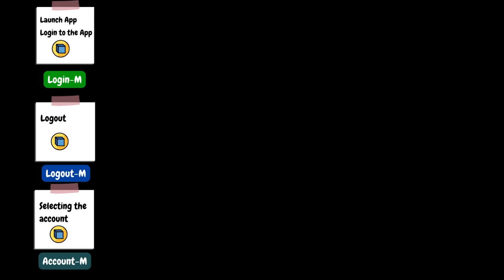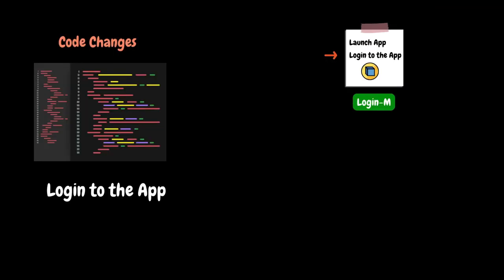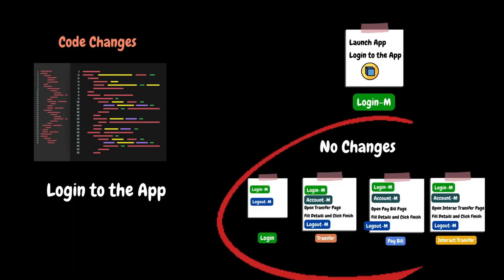Instead, they can identify the common steps in all the flows and create an independent module so those common steps can be reused in all scripts. For example, a separate module for login consisting of launch and login steps, and separate modules for logout and select account. Now they can replace the repetitive steps with the respective modules in the login, transfer, pay bill, and interact transfer scripts. With this new approach, if the client makes code changes to the login step, you just need to make the change in the login module alone, and all changes will automatically apply to all scripts. This practice organizes code properly and promotes the code reusability principle.